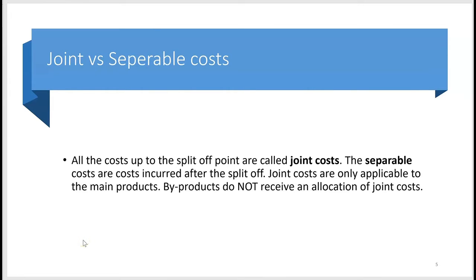The vocabulary you'll see on the exam: all costs up to the split-off point are called joint costs. After the split-off, you have what's called separable costs. Joint costs are only applicable to the main products — product A, product B. If you see that there's a byproduct in the facts, don't allocate any joint cost to any byproduct. Only allocate joint costs to the joint products, the main products.